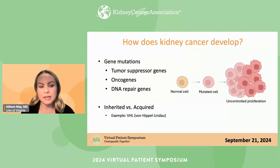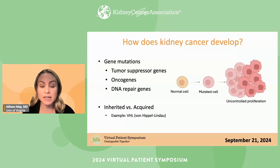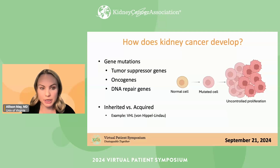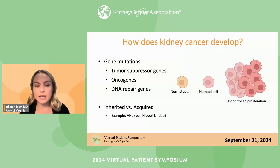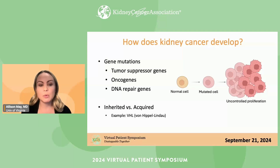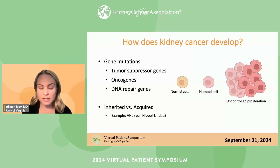This can happen in an inherited or acquired manner. One example is the VHL gene, or von Hippel-Lindau gene — a tumor suppressor gene. You may have heard of VHL disease, which happens when a VHL mutation is passed down through families, giving those patients a higher risk of tumors. But the majority of kidney cancer also has VHL mutations, and most of those people don't have actual VHL disease — they've acquired those mutations.